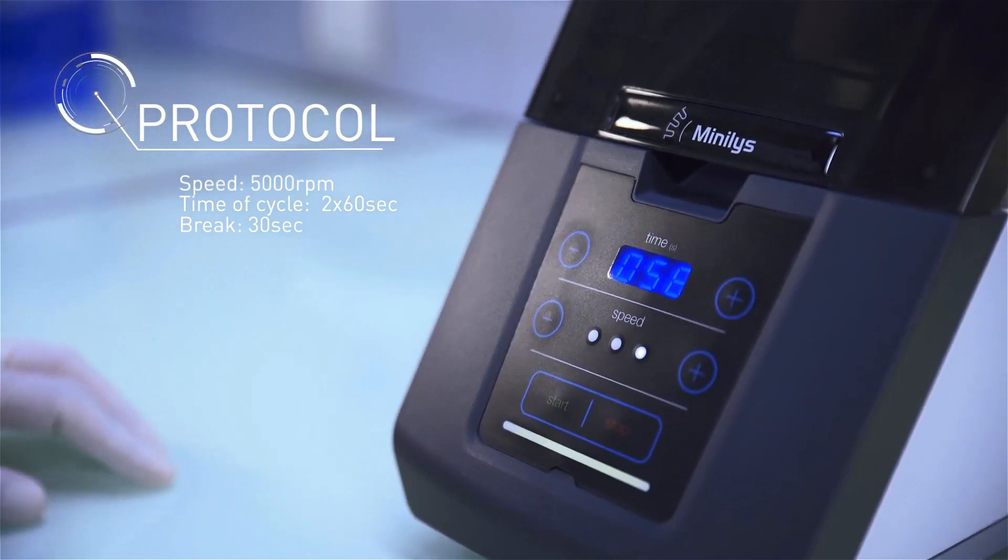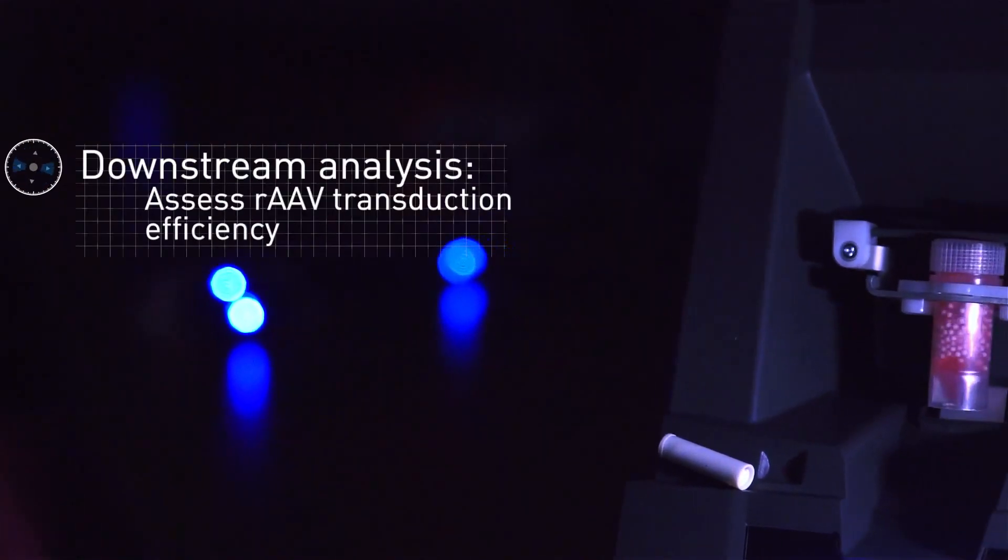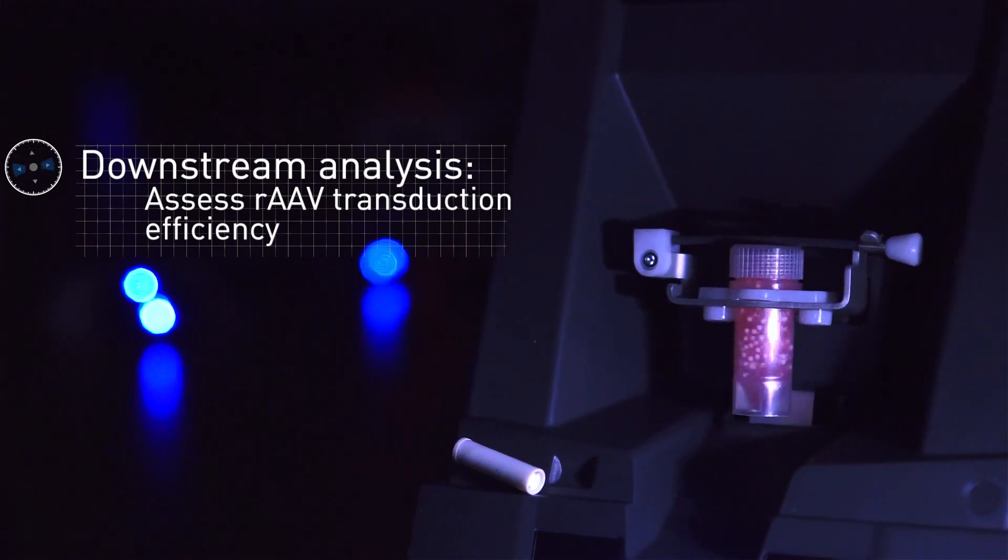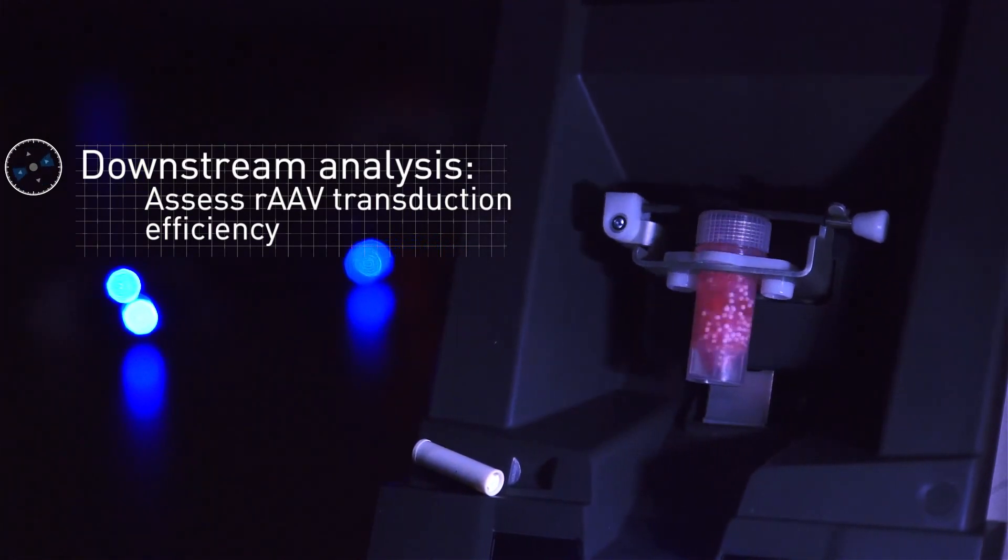Lysates from each method are used to transduce HEK293T cells and rAAV infectivity is compared by observation under the microscope.